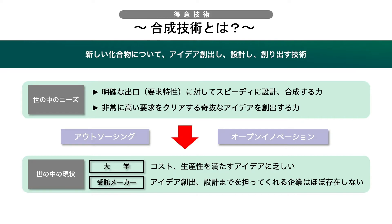一般的に合成技術とは、新しいものをアイデア創出し、設計し、作り出す技術です。昨今、新しいものを作り出す上流の研究開発工程においても、これまで以上に出口が明確であることやスピードが求められる中、アウトソーシングやオープンイノベーションの活用が盛んに言われ始めております。しかしながら、アイデア創出や設計までを担ってくれるメーカーはほとんどございません。